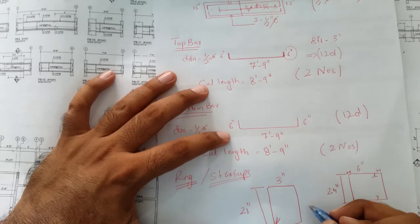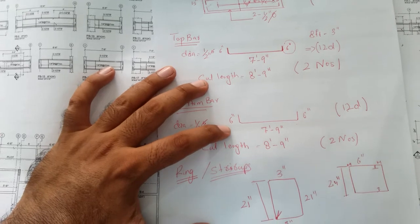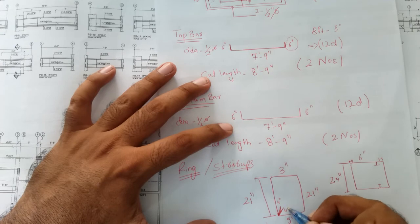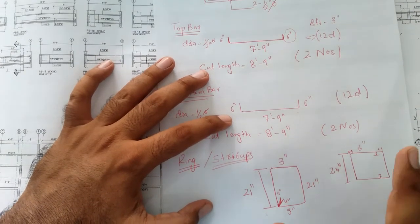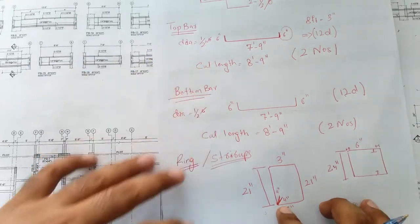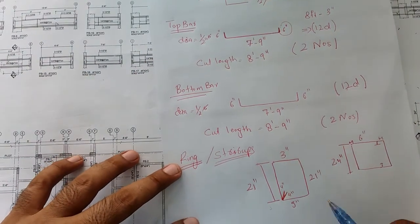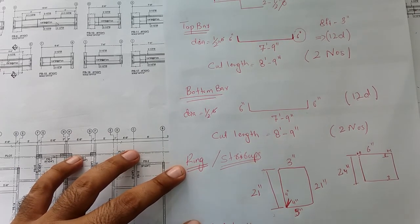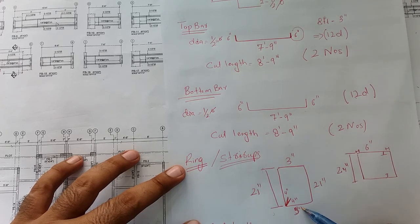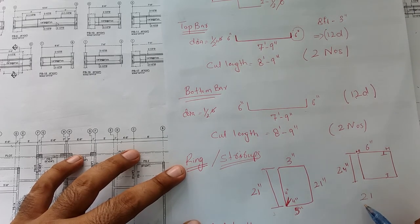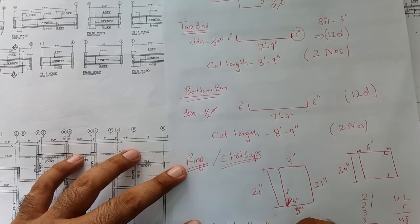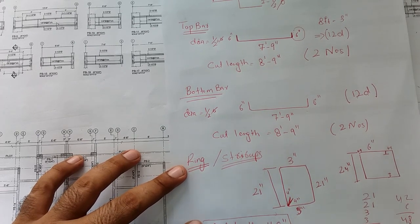So the ring dimensions are: short side = 3 inches, long side = 21 inches, and these repeat on both sides. The hook lengths are 4 inches each, as given in the diagram. To get the cut length of the stirrup: 3 + 3 = 6 inches for the two short sides, 21 + 21 = 42 inches for the two long sides, plus hook lengths. Adding 6 + 42 = 48 inches — so 48 inches is the cut length of the stirrup.